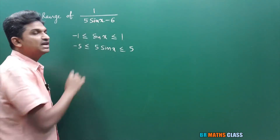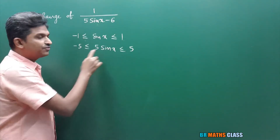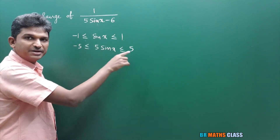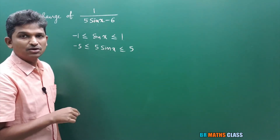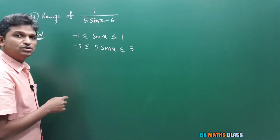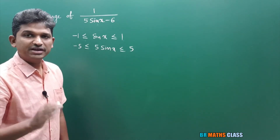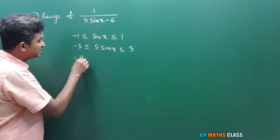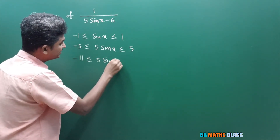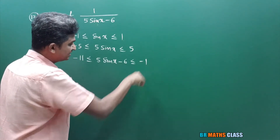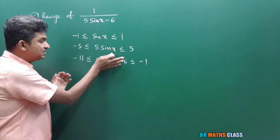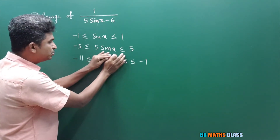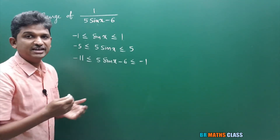I am trying to get 5sinx minus 6. I have 5sinx; now I need minus 6. To get 5sinx minus 6, I will subtract 6 from this complete inequality. For an inequality, if you subtract a real number, the inequality sign remains the same. Minus 5 minus 6 is minus 11 ≤ 5sinx minus 6 ≤ 5 minus 6 which is minus 1. This expression lies between minus 11 and minus 1. Any number between minus 11 and minus 1 is clearly negative.